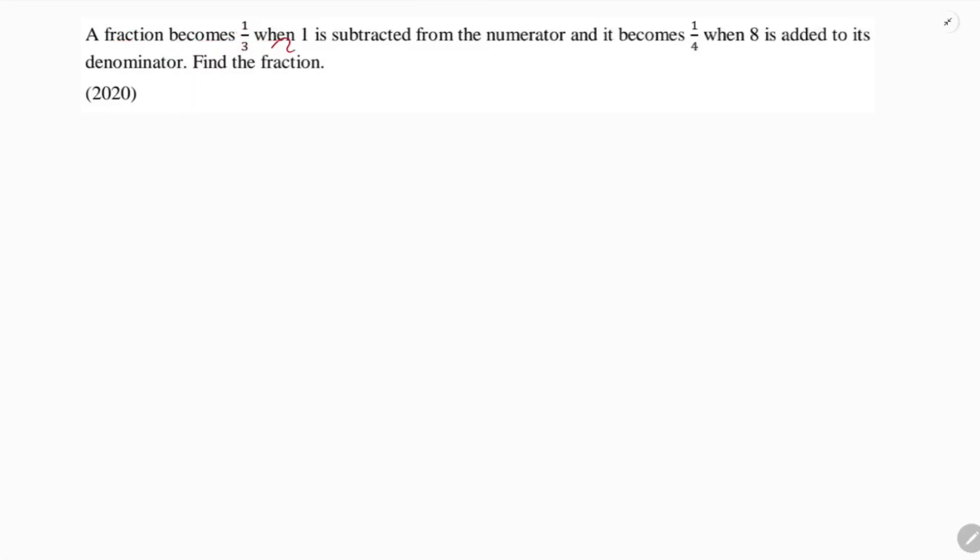A fraction becomes 1 by 3 when 1 is subtracted from the numerator and it becomes 1 by 4 when 8 is added to its denominator. Find the fraction.